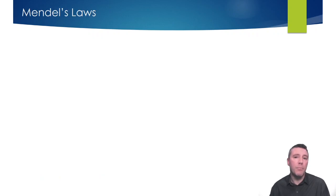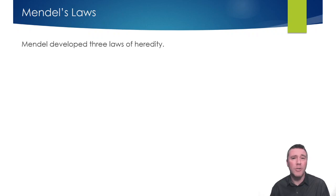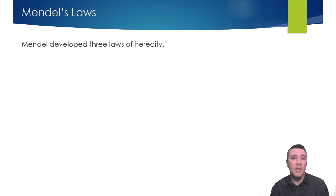Mendel presented his paper, Experiments on Plant Hybridization, in 1865. Mendel's three laws of heredity were largely ignored by the scientific community because it was seen as essentially about plant hybridization rather than inheritance patterns. Quite simply, others did not understand the monumental significance of Mendel's discoveries.